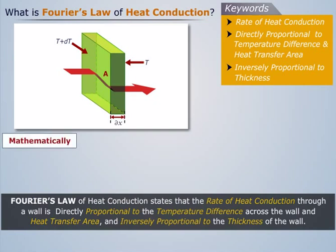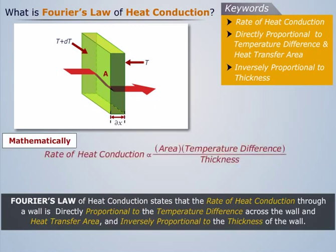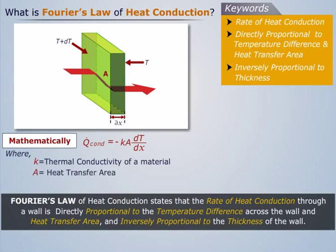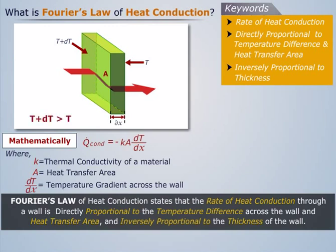Mathematically, Fourier's law of heat conduction is expressed as Q = -K·A·(DT/DX), where K is the thermal conductivity of a material, A is the heat transfer area, and DT/DX is the temperature gradient across the wall. The negative sign in the expression indicates the negative temperature gradient due to the increase in temperature along the thickness.